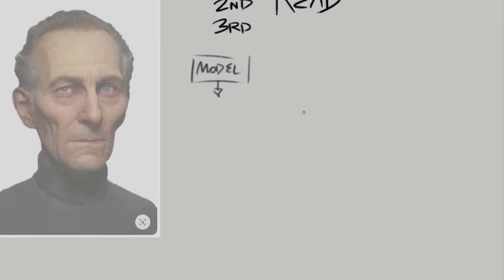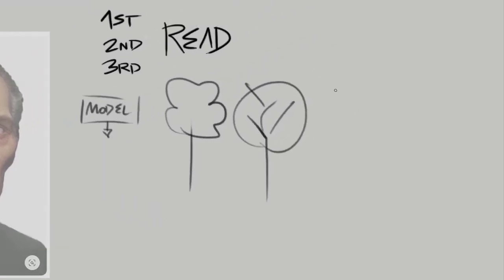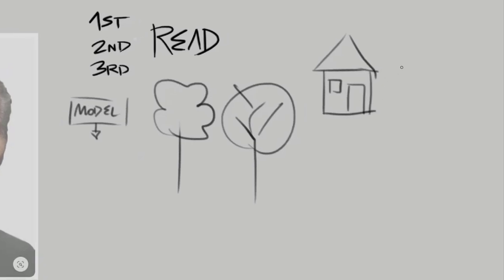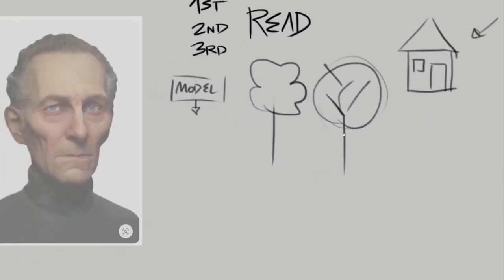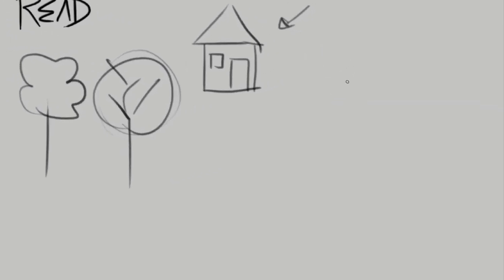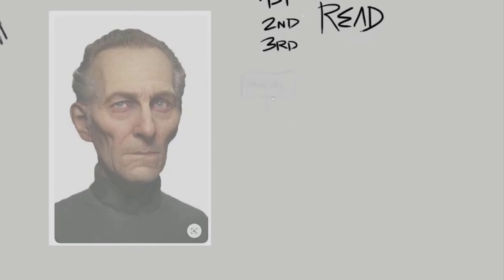If you ask anyone — or if you ask a child — to draw a tree, they do something like this. Or if you ask them to draw a house, they do this. And if you show this to anyone in the world, they can tell this is a house. Basic shapes. Also, if you tell a child to draw a face, they draw a sphere, eyes, mouth. We don't actually capture the world like a photograph. We make a low-resolution model.